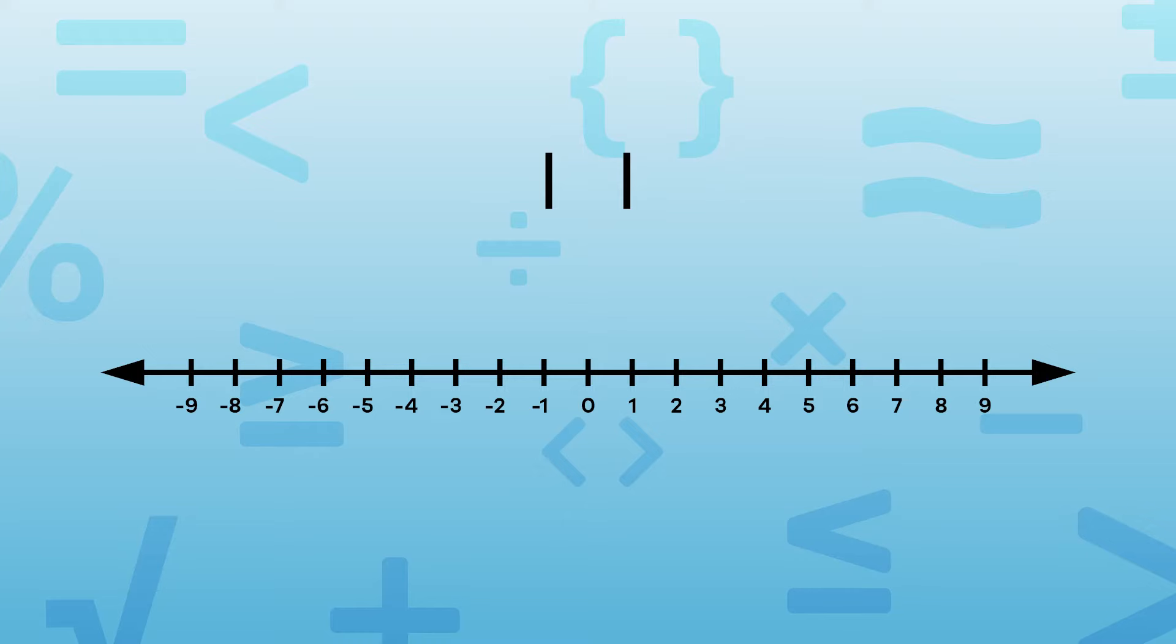Let's try an example. If you were to figure out the absolute value of 4, you would look at how far away the number 4 is from the number 0 on a number line. Like this. The absolute value of 4 equals 4.